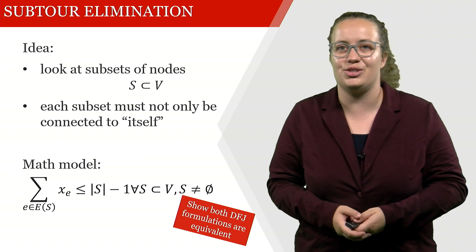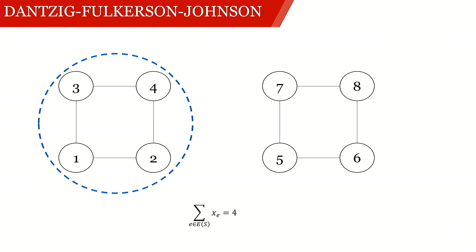So for example, let's just look into this one constraint for this subset here. So in this subset here, 1, 2, 3, 4, actually we have four active edges within the subset. And since we have four active edges within the subset, this doesn't work. This constraint is violated, which means that this is not a solution to the TSP and we have to continue searching.